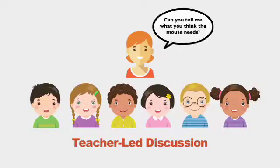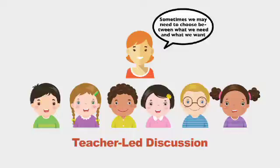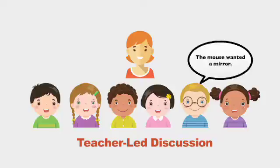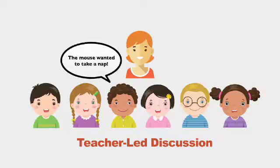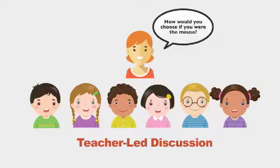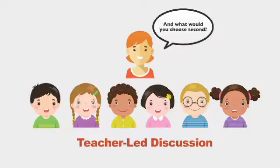Can you tell me what you think the mouse needs? Can you tell me what he wants? Sometimes we may need to choose between what we need and what we want, or we might have to choose between two things we want. Discuss as a group what choices the characters in the story made. As a class, reflect on three items the main character in the story wanted: the mouse wanted a straw, the mouse wanted a mirror, the mouse wanted to take a nap. Ask students: How would you choose if you were the mouse? Which one would be your first choice? Which would you choose second? And how about your third choice? Why did you choose those, and what made you put them in that order?